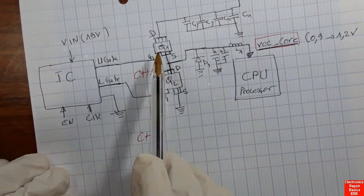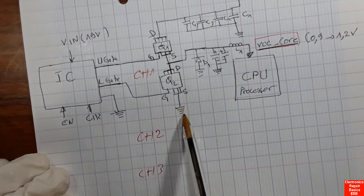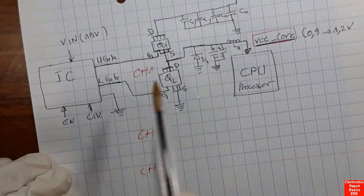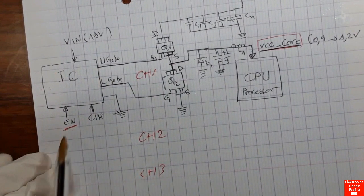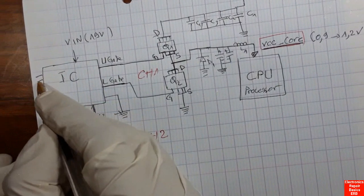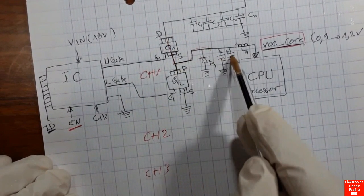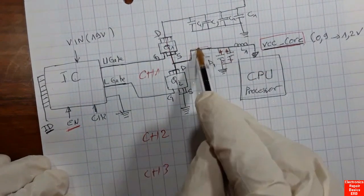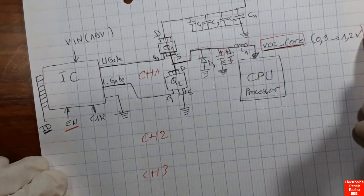So one IC with two MOSFETs and all these components forms just the first channel. There are two other channels with the same working principle, but one IC controls all three channels. Basically, all circuits in the laptop or computer motherboard have the same working principle — always an IC, MOSFETs, capacitors, diodes, and an output voltage. The CPU power management IC should receive ID signals — about 8 signals — which determine the VCC core value.